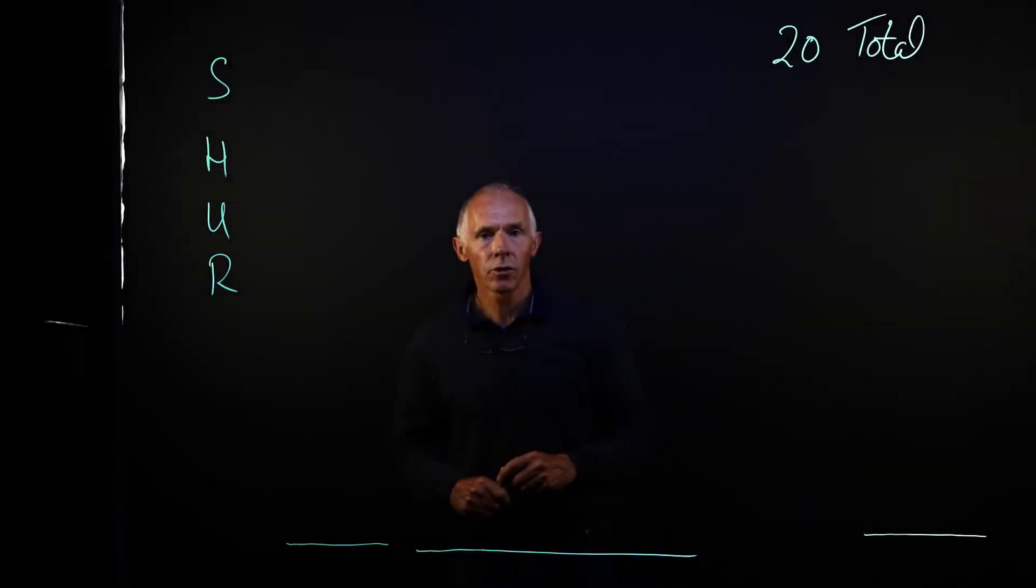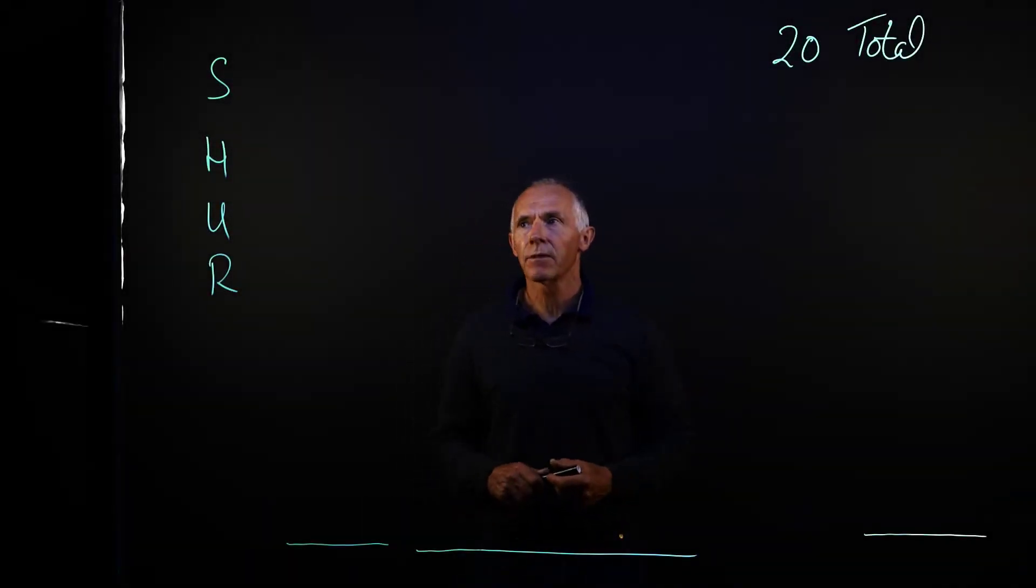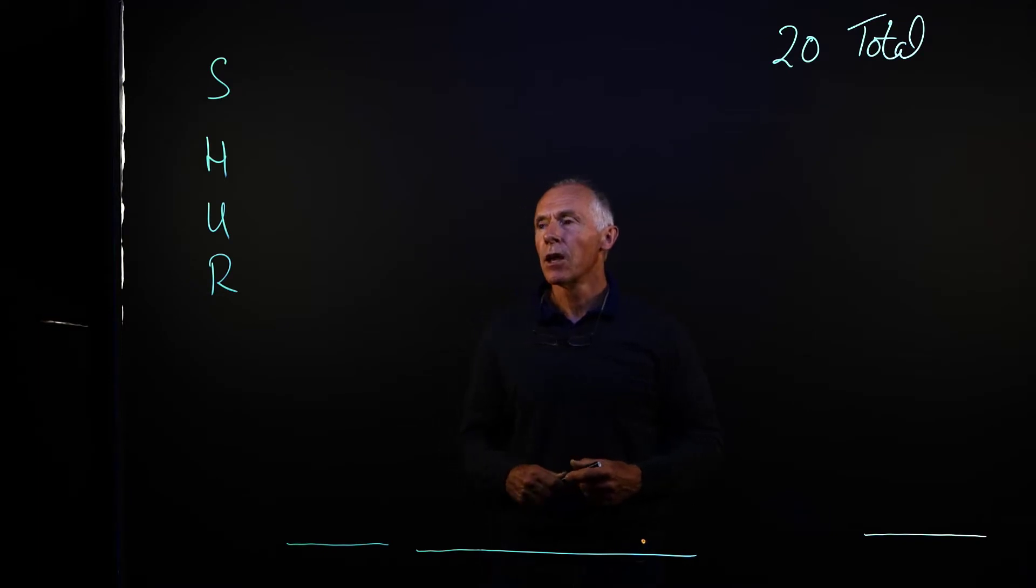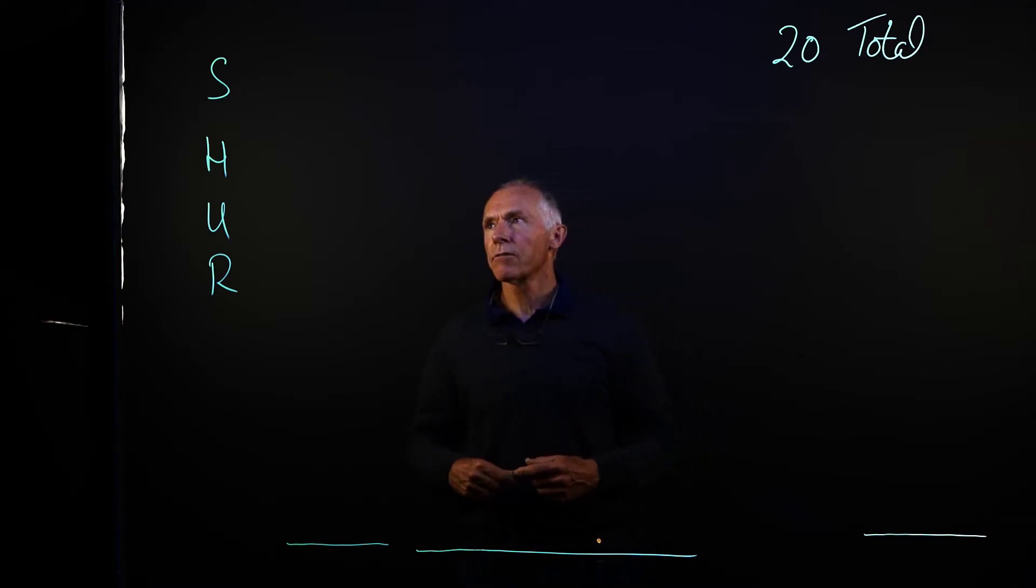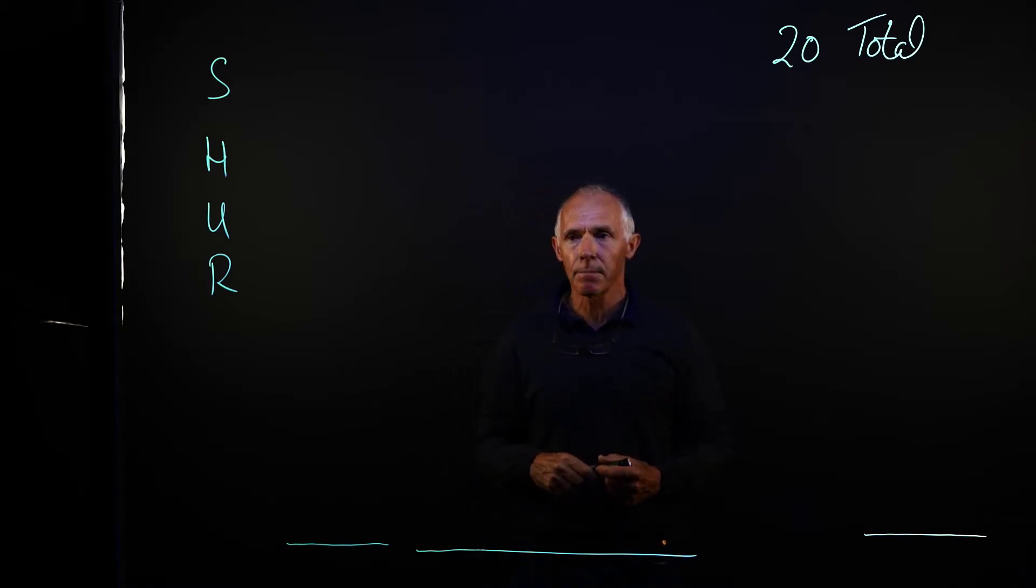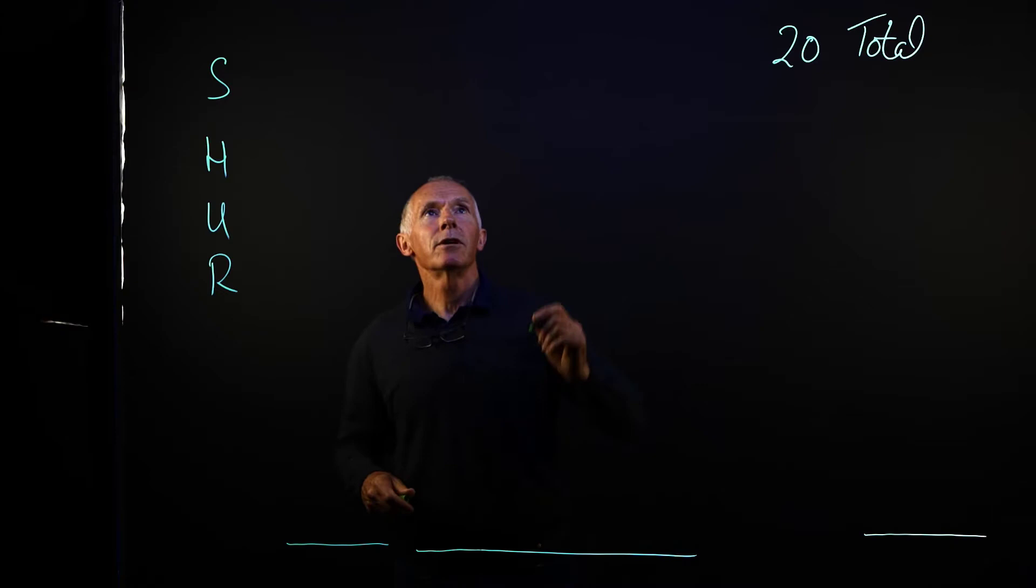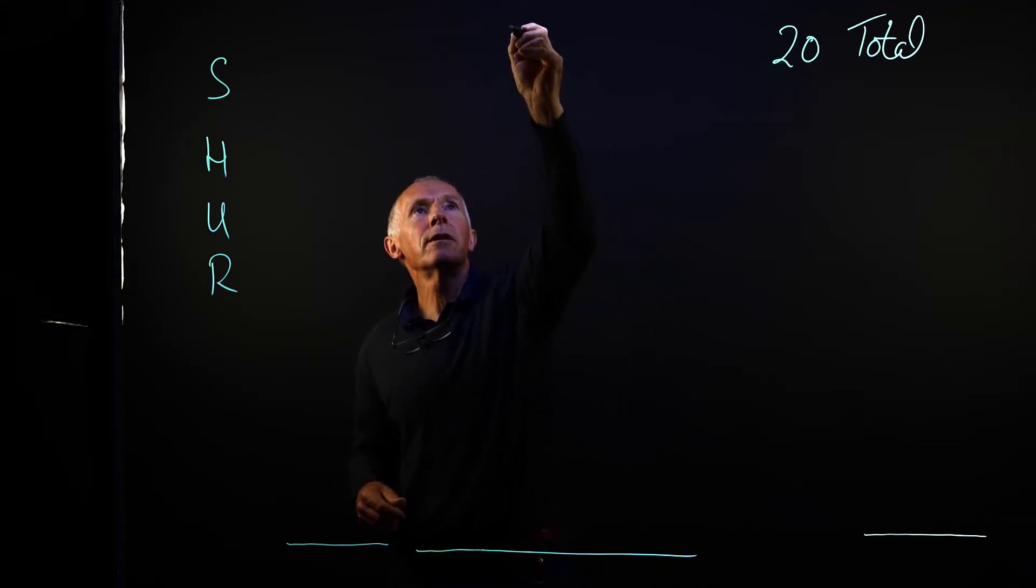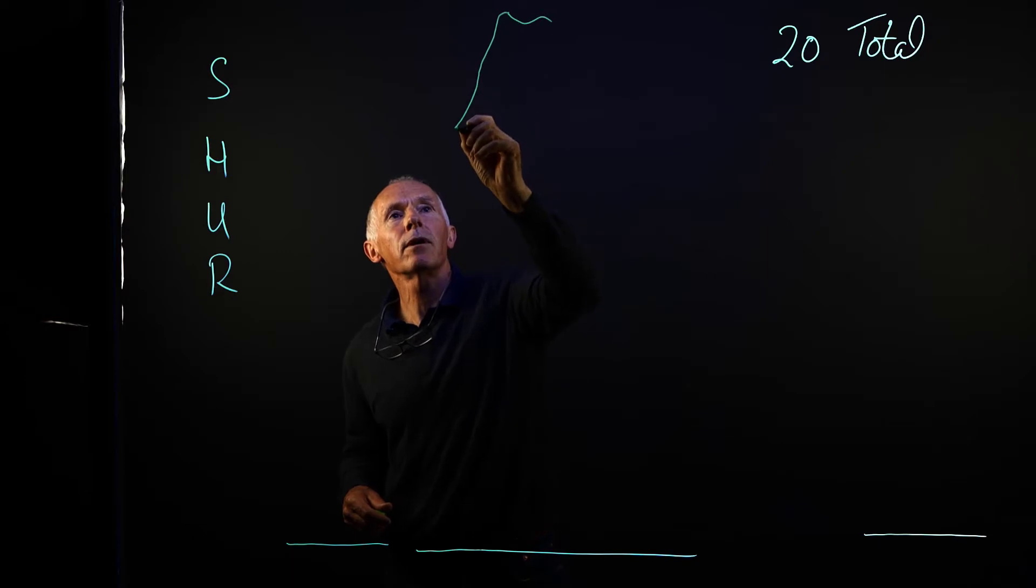So in this session we're going to look at the 20 bones that make up the forelimb of the horse. We're going to use Chris Gregory's acronym SHUR to remember the larger bones of the proximal region of the limb, and then we just need to practice drawing the bones to be able to remember all of them.